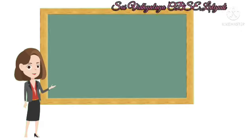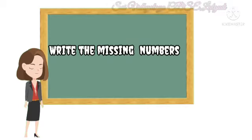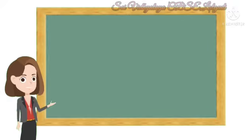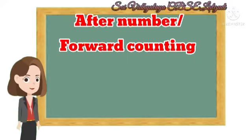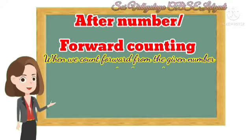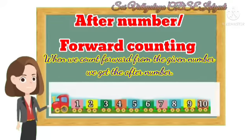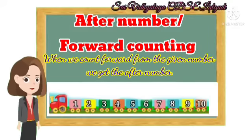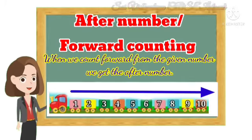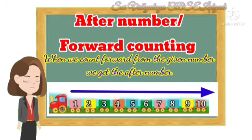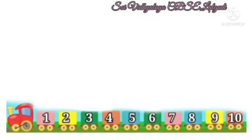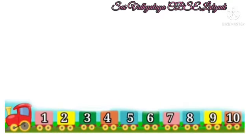First topic is write the missing numbers. Children, do you know what is mean by after number? When we count forward from the given number, we get the after number. That means if we count numbers from 1 to 10, it's called after number or forward counting. Let's count the numbers from 1 to 10.